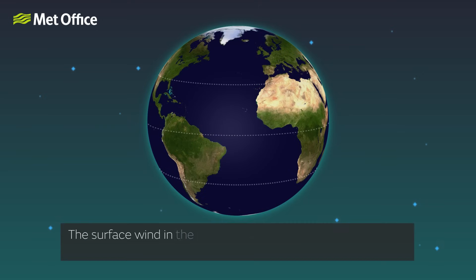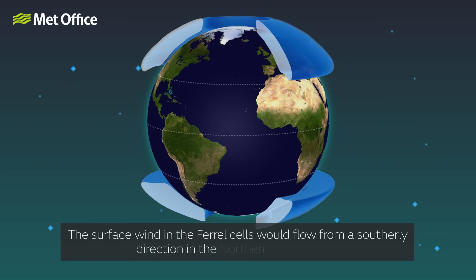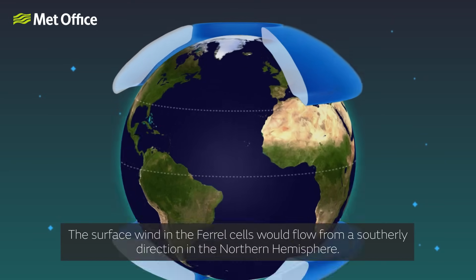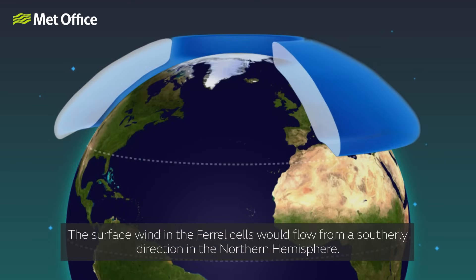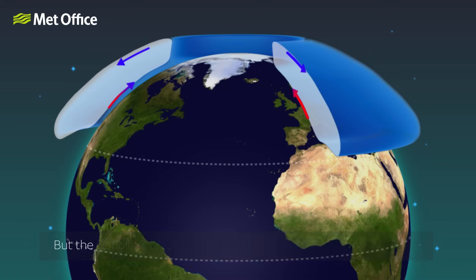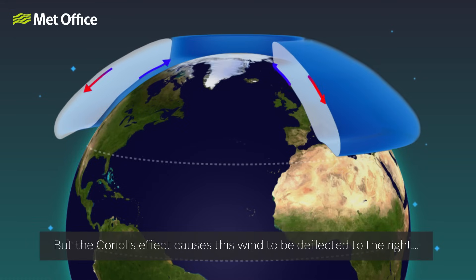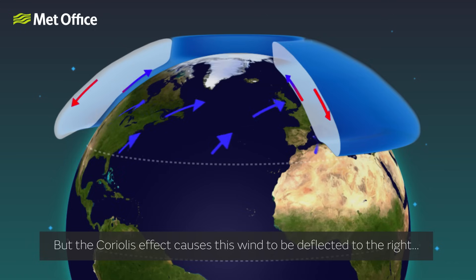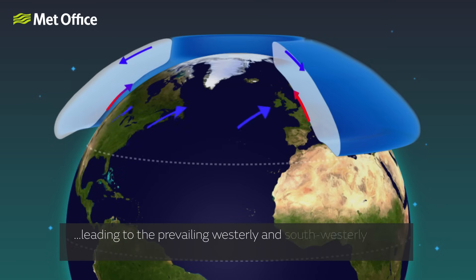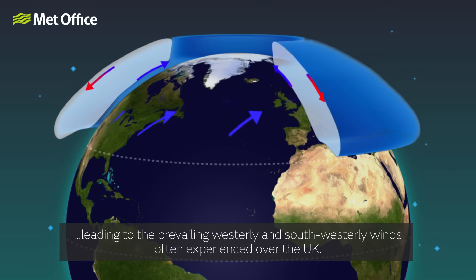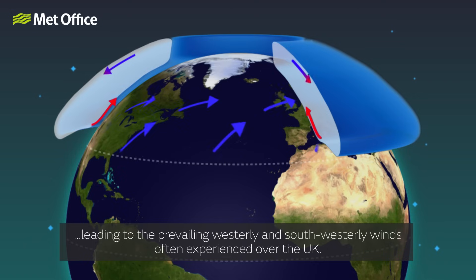The surface wind in the Ferrell cells would flow from a southerly direction in the northern hemisphere, but the Coriolis effect causes this wind to be deflected to the right, leading to the prevailing westerly and southwesterly winds often experienced over the UK.